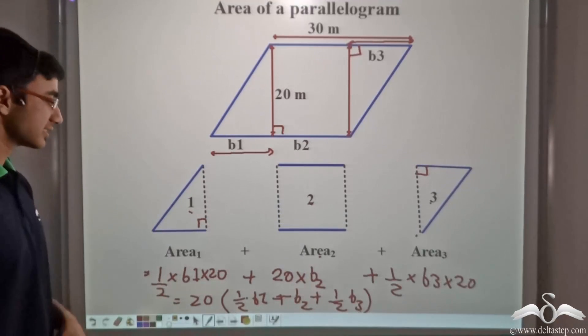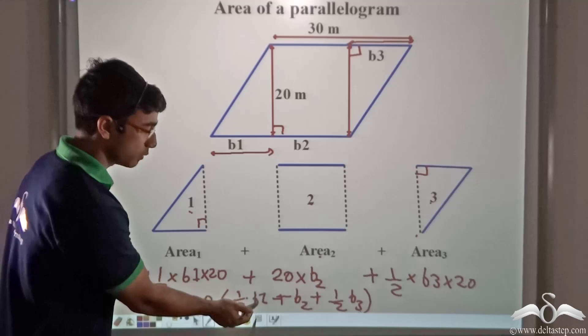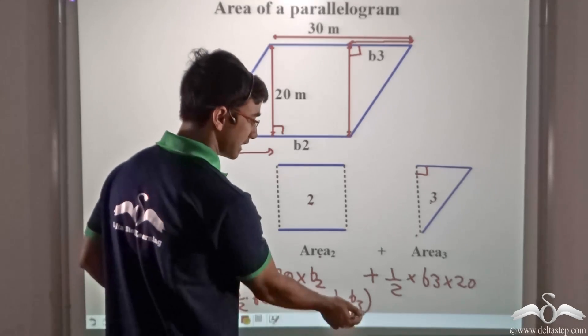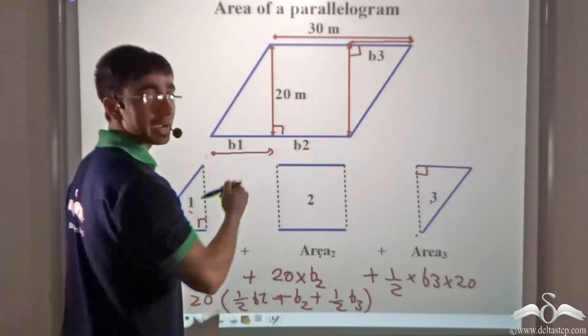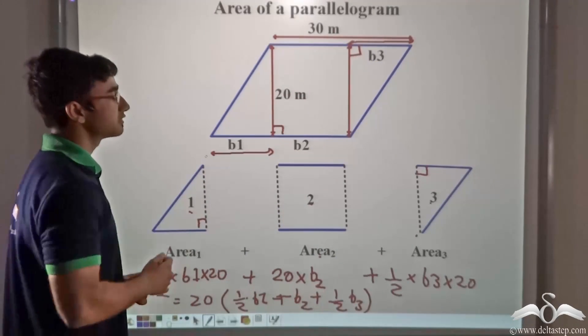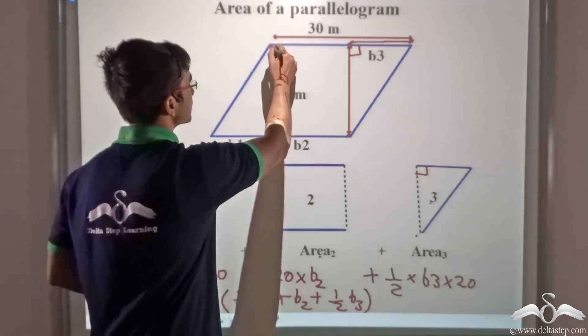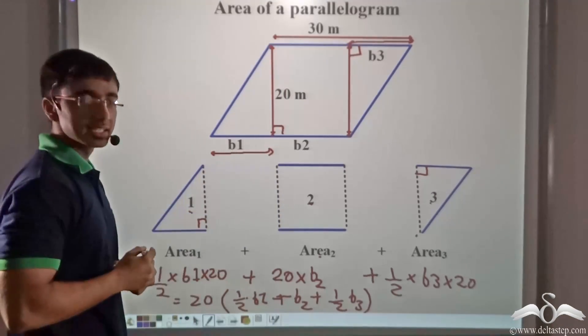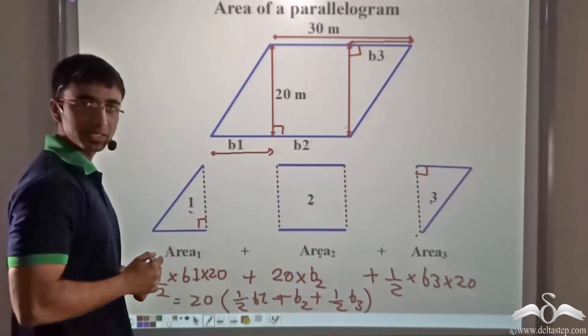So from this I can say that 20 into half B1 plus B2 plus half B3 will give me the area of the entire parallelogram. Now observe this particular figure again closely. If you see this figure closely, we have studied that opposite sides of a parallelogram are equal in length.